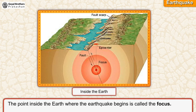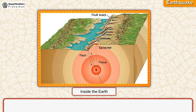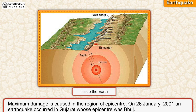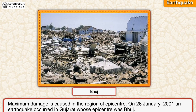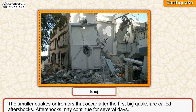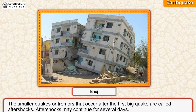The point inside the earth where the earthquake begins is called the focus. The center of the earthquake on the surface of the earth is called the epicenter. Maximum damage is caused in the region of the epicenter. On 26 January 2001, an earthquake occurred in Gujarat, whose epicenter was Bhuj. The smaller quakes or tremors that occur after the first big quake are called aftershocks. Aftershocks may continue for several days.